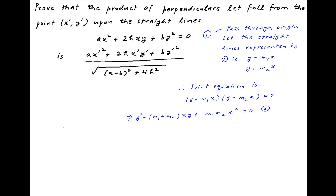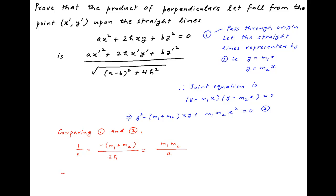Now both equations 1 and 2 represent the same pair of straight lines. Therefore, the ratio of the coefficients of y squared in the two equations, that is 1 upon b, is equal to the ratio of the coefficients of xy, that is minus of m1 plus m2 upon 2h, is equal to the ratio of the coefficients of x squared, that is m1m2 upon a. Therefore, m1 plus m2 is equal to minus 2h upon b, and m1 times m2 is equal to a upon b.